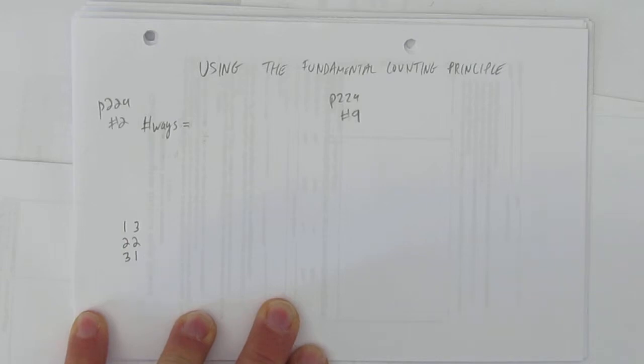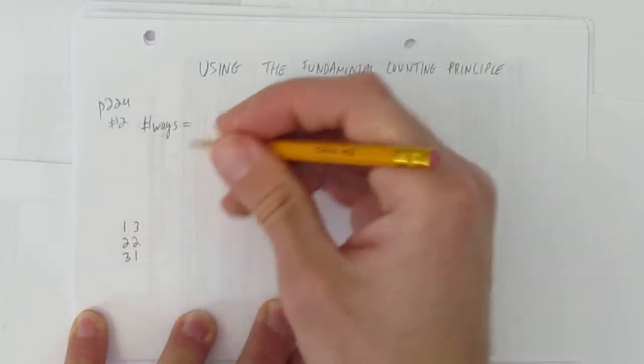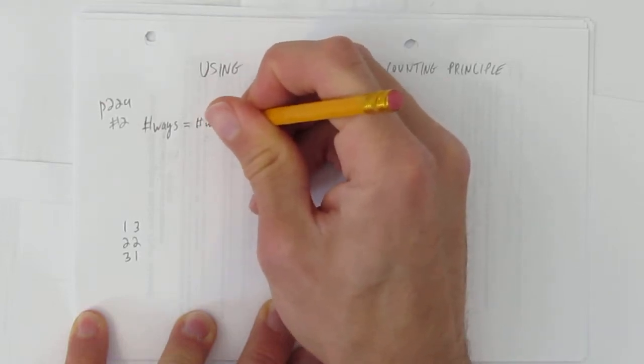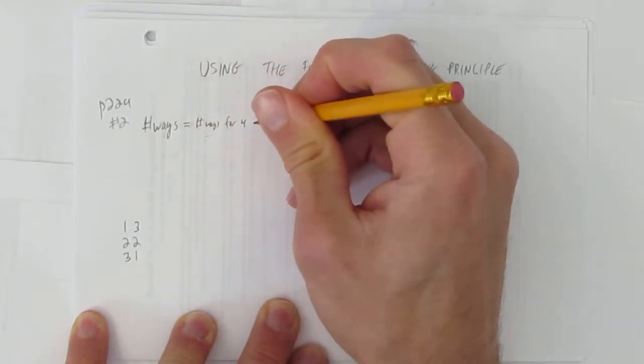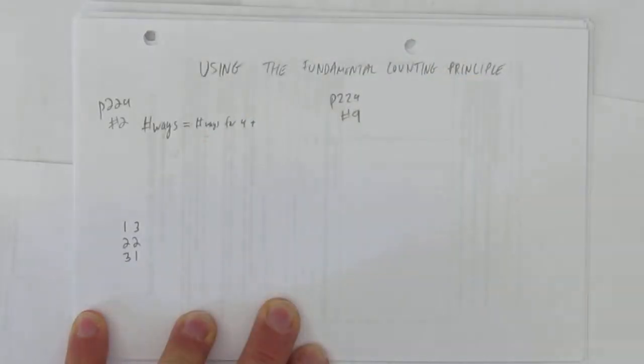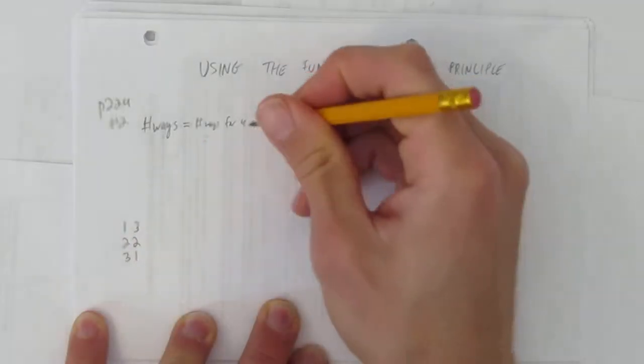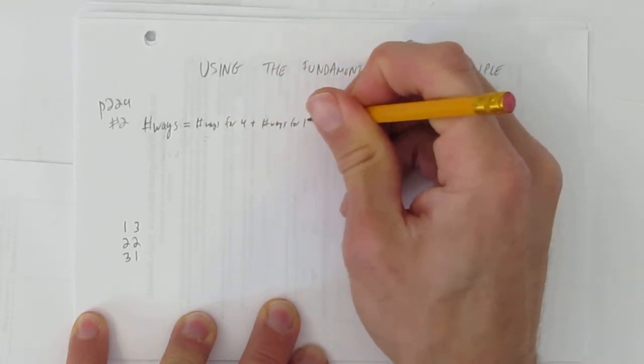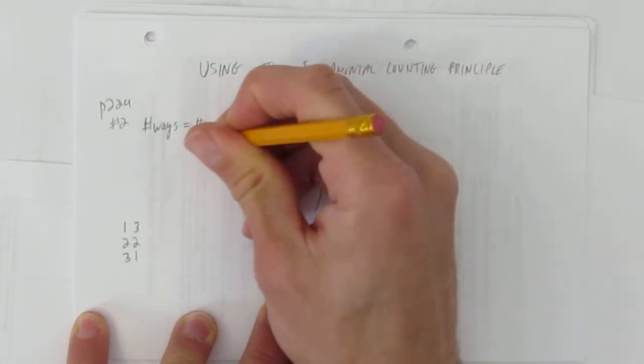How many ways can you roll either a sum of 4? There are three ways. Let's write that down. Number of ways equals number of ways for 4 plus, and now, how many ways can you roll an 11? Number of ways for 11, which equals.